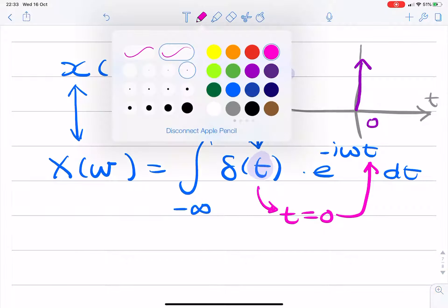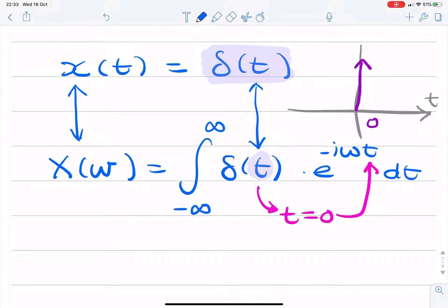We no longer need to integrate. So the result is simply e to the minus iω·0, which is 1. So the Fourier transform of a unit impulse is actually a constant value, that constant value of 1.